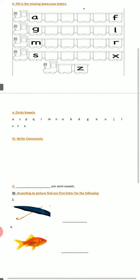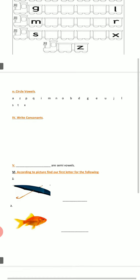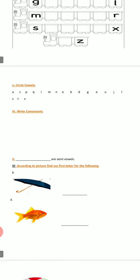Fourth task: write consonants. How many consonants are there? There are 19 consonants. You all know very well which they are. Write those 19 consonants in the given place.